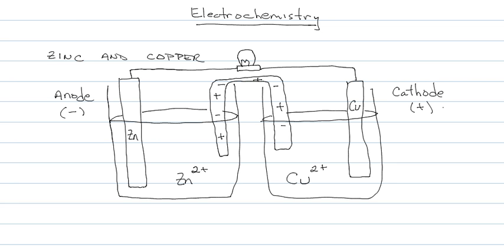Electrons always flow A to C, anode to cathode. So the electrons will flow through the wire from the zinc to the copper electrode. Ions from the salt bridge will flow into each beaker. Anions go to the anode. Cations go to the cathode. And that pretty much is the cell.